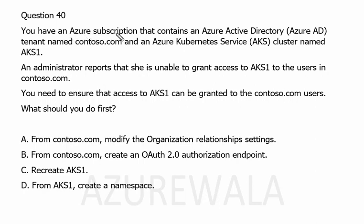You have an Azure subscription that contains an Azure Active Directory tenant named contoso.com and an Azure Kubernetes Service cluster named AKS1. An administrator reports that she is unable to grant access to AKS1 to users in contoso.com. You need to ensure that access to AKS1 can be granted to contoso.com users. What should you do first?